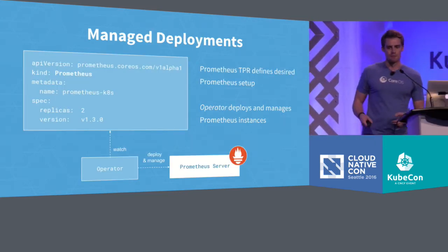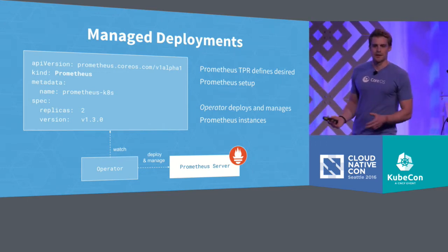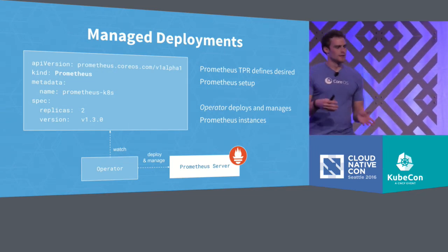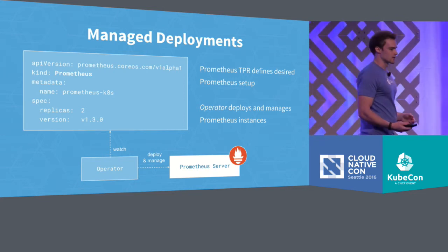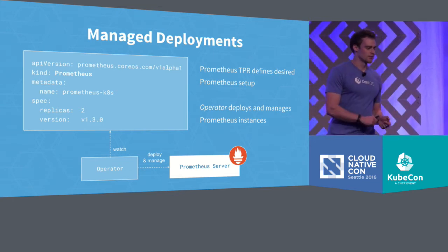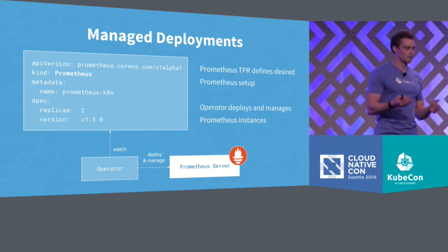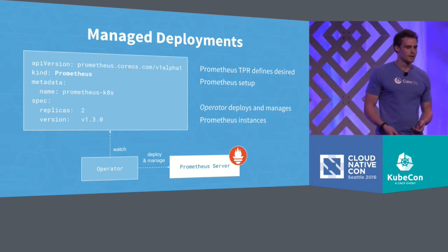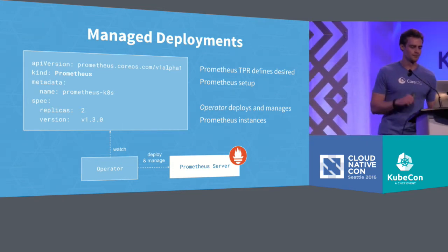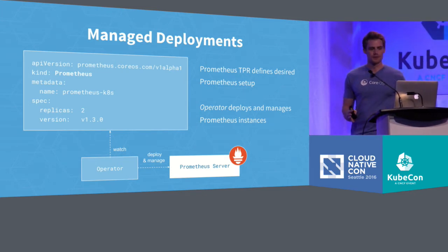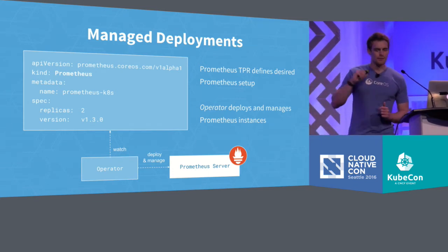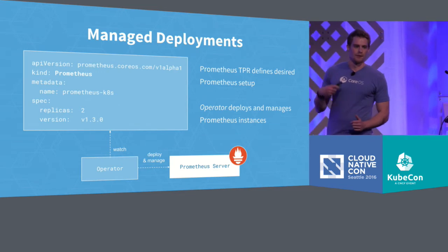That's why at CoreOS we came up with the operator concept, which simply means we take operational domain knowledge of a certain application and express it as source code. We then make this knowledge accessible to a user of a Kubernetes cluster via third-party resources. In Prometheus this looks as follows: we have a Prometheus resource object which looks like any other Kubernetes object — a YAML file where you specify the kind, you can add labels, et cetera. The specification just has the basic data about the Prometheus setup we'd like to run in our cluster. The operator watches this resource, and as soon as you add it via kubectl, it will immediately start deploying the appropriate setup and manage its lifecycle for you.